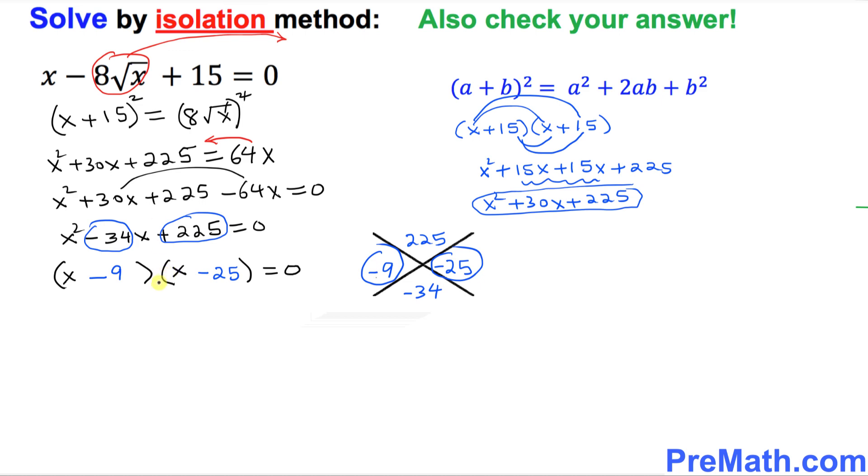And now since we have our two factors equal to 0, I can separate them. I can split them up. x minus 9 equal to 0. And x minus 25 equal to 0. So that's going to give you x equal to 9. And on this side, it's going to give us x equal to 25.